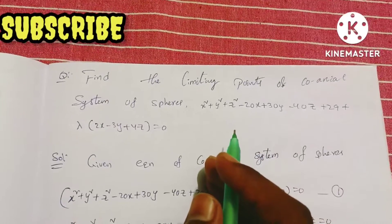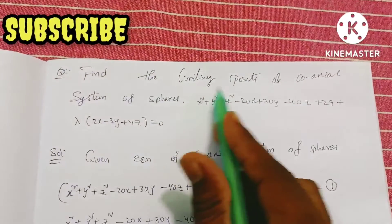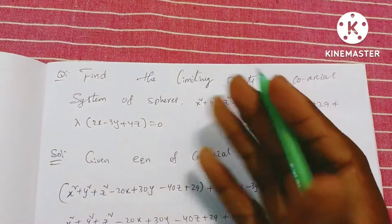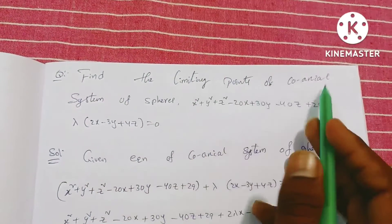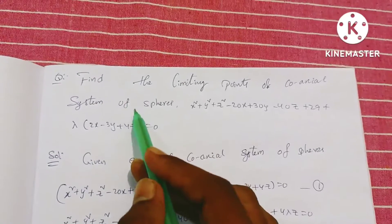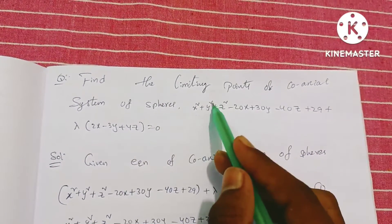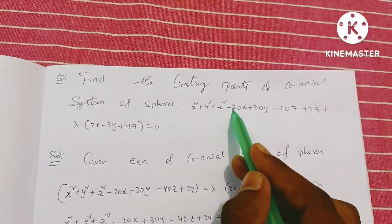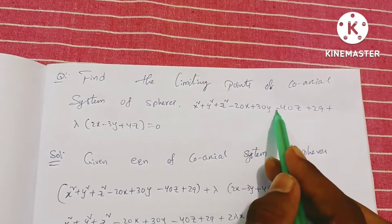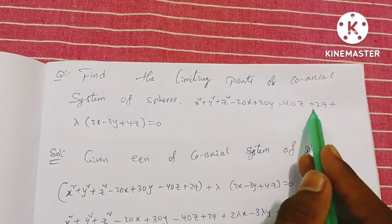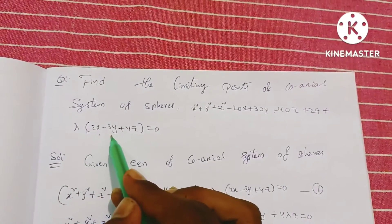In this video, let's talk about limiting points method 1. Find the limiting points of a coaxial system of spheres: x² + y² + z² − 20x + 30y − 40z + 29 + λ(2x − 3y + 4z) = 0.